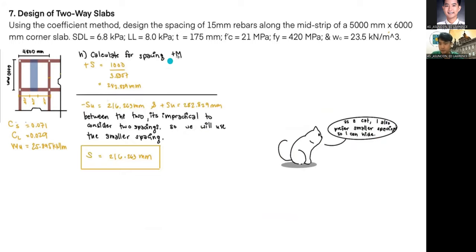Our next step is to calculate for the spacing for the positive moment of the short span, giving us 1,000 over 3.5357, which is 282.829 millimeters. Now we have two values for our spacing, but since it's impractical to consider two spacings, we will only use the smaller spacing of the two, which is for the negative span, so we use S equals 216.263 millimeters.